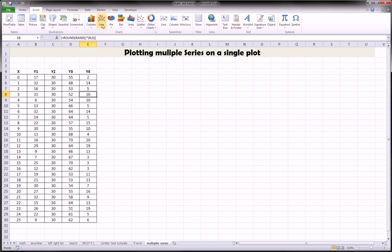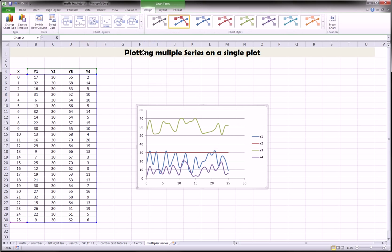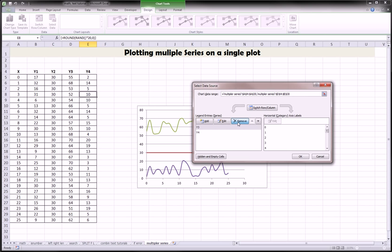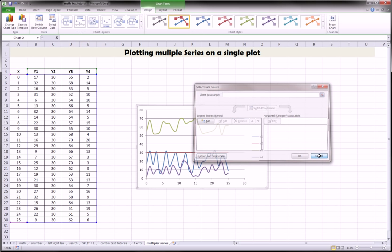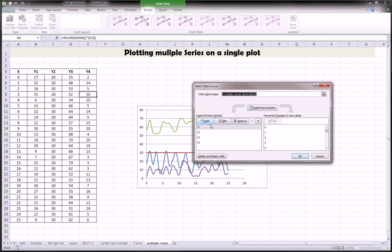Go to insert, scatter, and we'll choose scatter with smooth lines. And Excel already picked some stuff up and made some suggestions, but we're going to select data and remove all these series. I'm going to teach you how to do it from scratch.